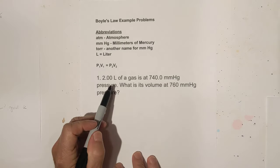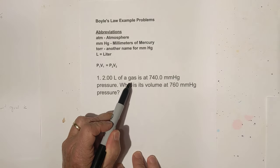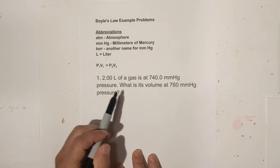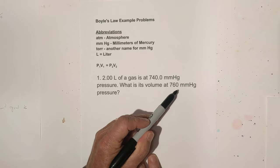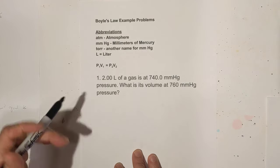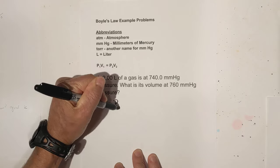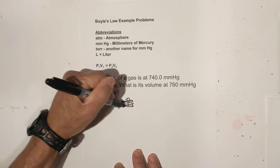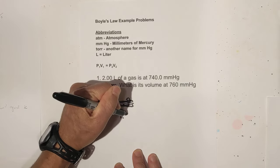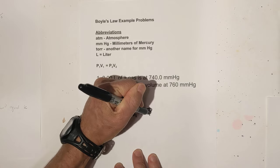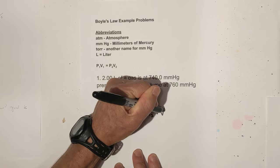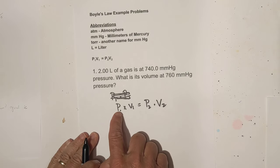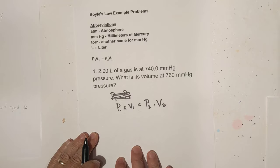Let's get started with the very first one. It says 2 liters, remember that's volume of gas, is at 740 millimeters of mercury, so that is pressure. What is the volume at 760 millimeters of mercury? So let's set this up. We have P1 times V1 is equal to P2 times V2.